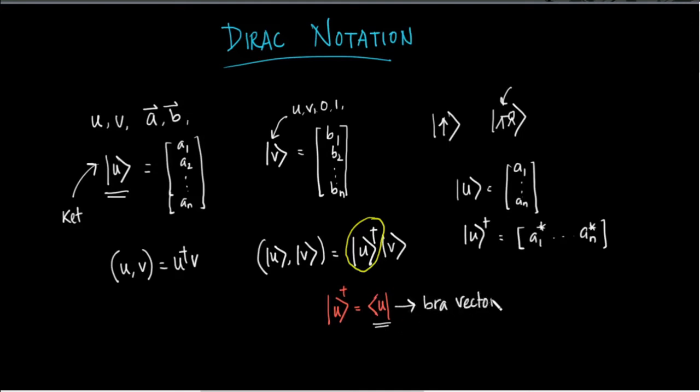This name was actually given by Dirac from the word bracket. From bracket, he separately used two parts of this naming. Bra vectors are used for row vectors like this, and ket vectors are used for column vectors like this.